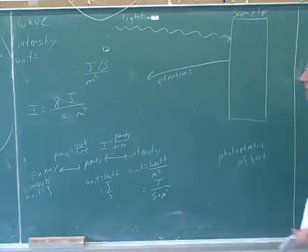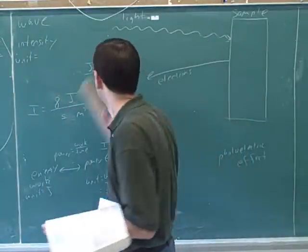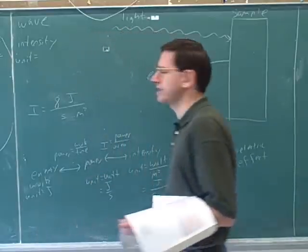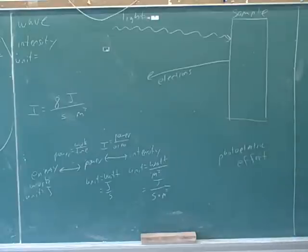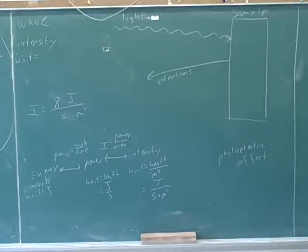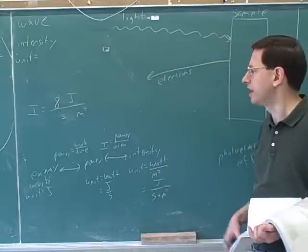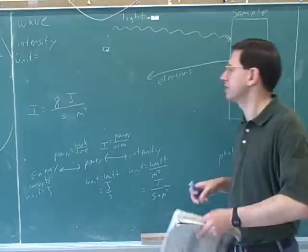So how would we interpret this intensity? This intensity of light. So for one second, we can cover like one meter squared of area. We'll have eight joules of energy. That's right. That's a good interpretation.